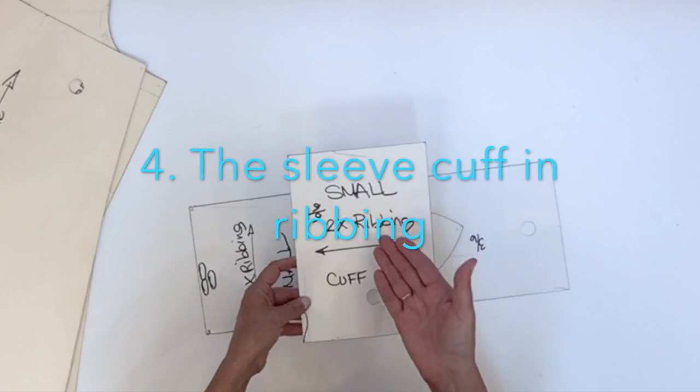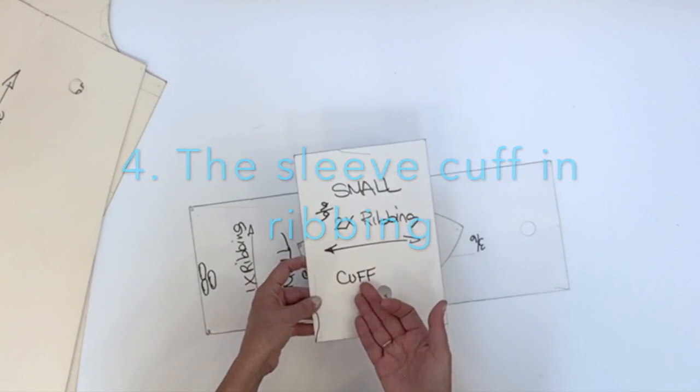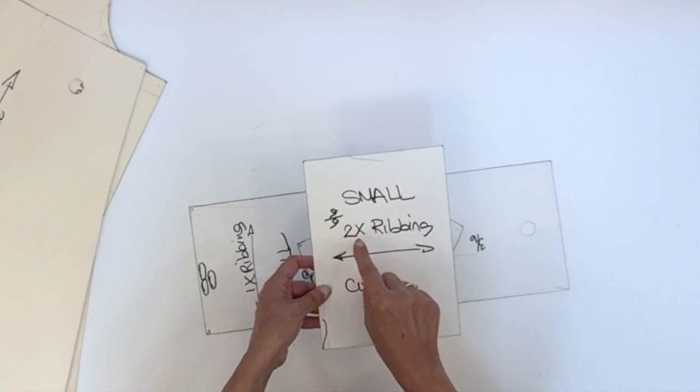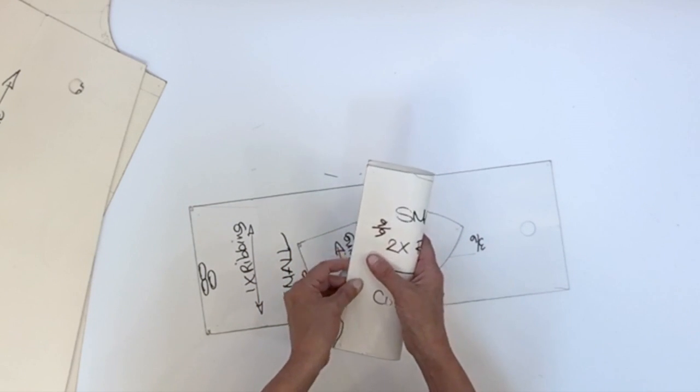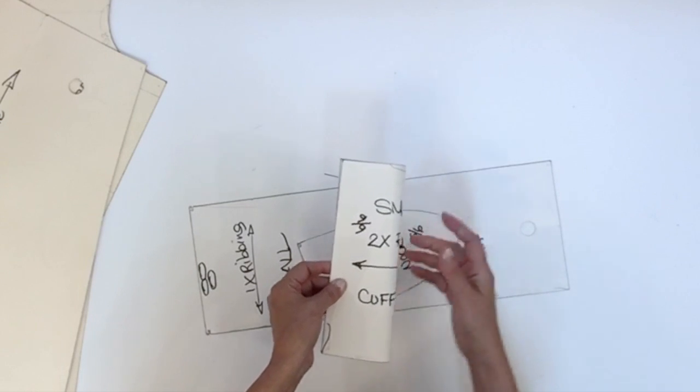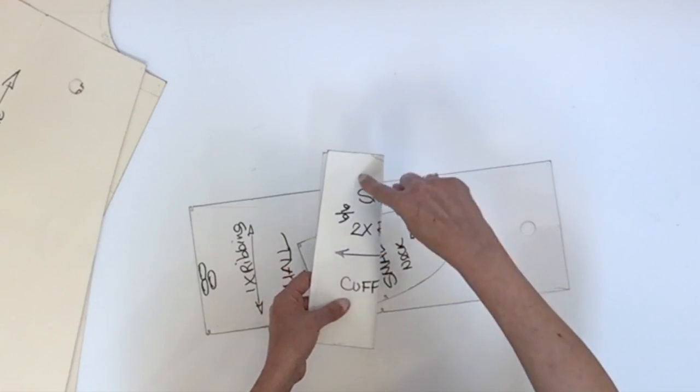The next piece is the ribbing for the sleeve cuff. You have to cut it two times in a stretchy fabric. It's going to be folded double for the cuff and the stretch has to go the other way around.